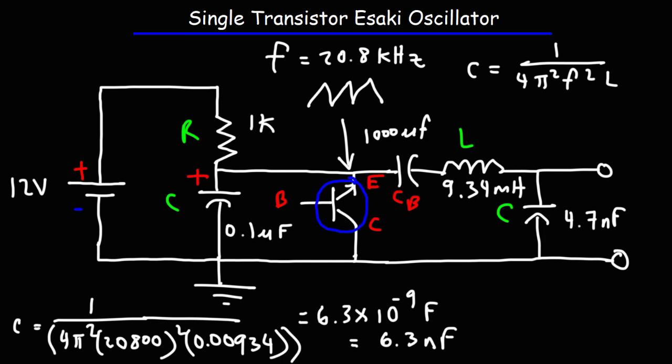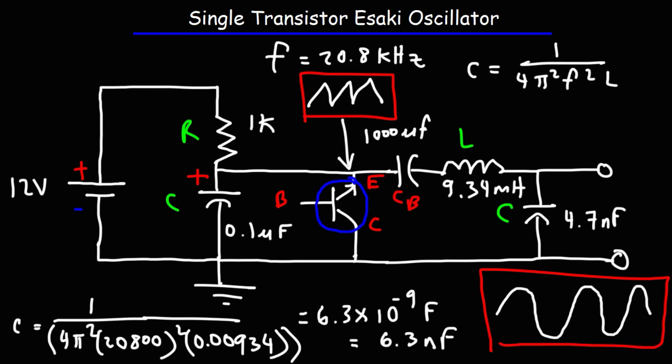It converted the sawtooth wave into a sine wave. Now, the sine wave wasn't perfect. One part of it was wider than the other part. So it wasn't a nice, even sine wave, but it definitely wasn't a sawtooth wave anymore. So that's how you can convert the sawtooth wave into a decent sine wave. It's by using an LC filter at the output of this circuit.